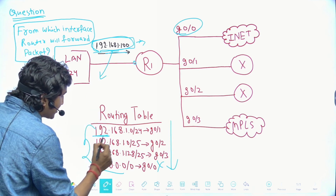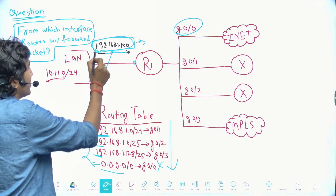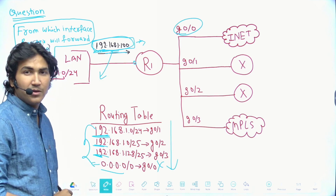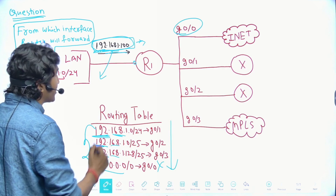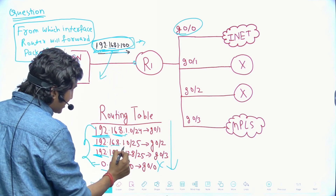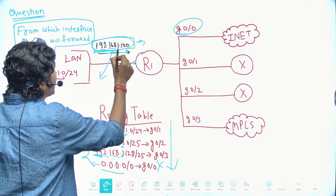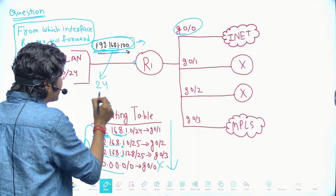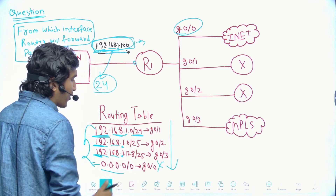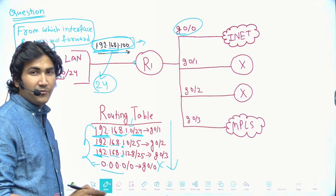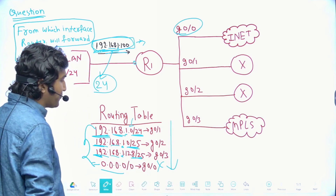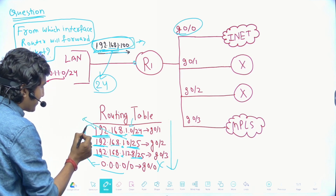In all three subnets, the first octet value is 192, matching the destination. The second octet is 168, also matching. The third octet is 1 in all subnets and in the destination — so 24 bits are matching in all three subnets. The /24 entry is therefore not specific enough, so we look at the fourth octet.